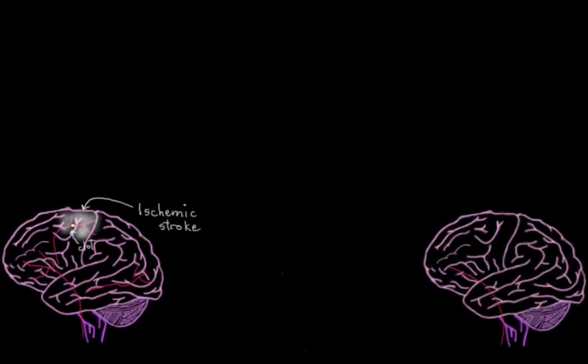Or you could have had a hemorrhagic stroke, for example, where a weakened blood vessel in the brain starts to leak, maybe because of a ruptured aneurysm or some trauma to the head, like from a fall or something unpleasant like that. But how does the type of stroke you have influence treatment?